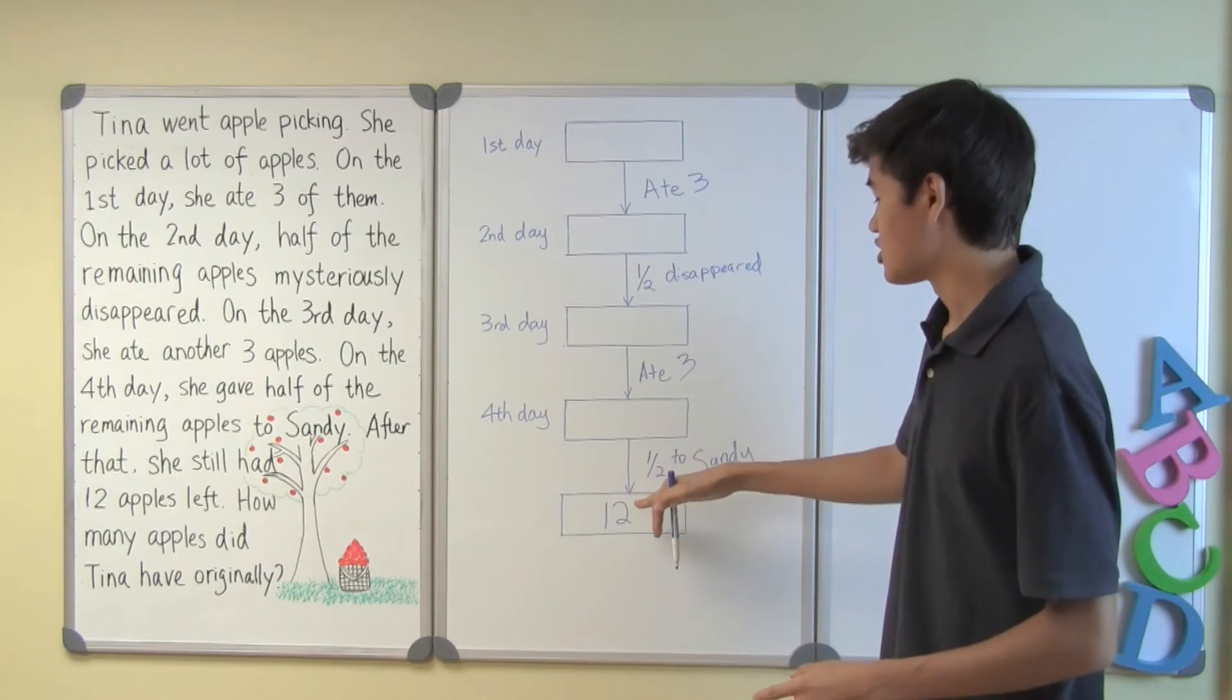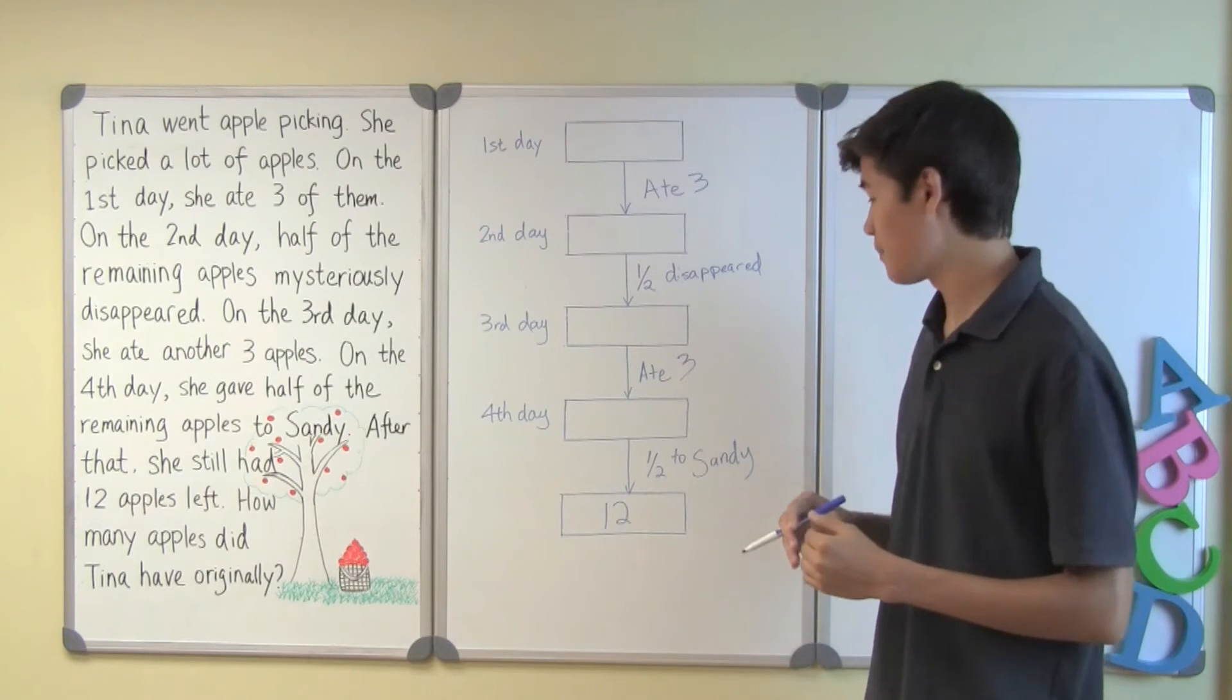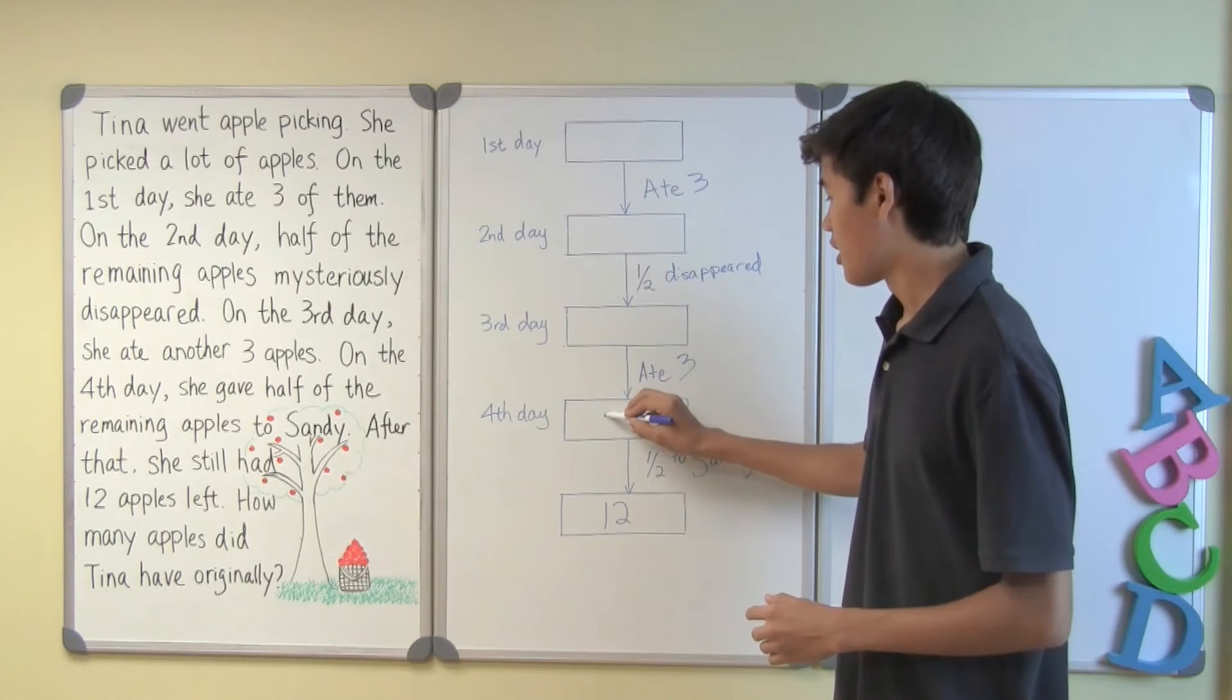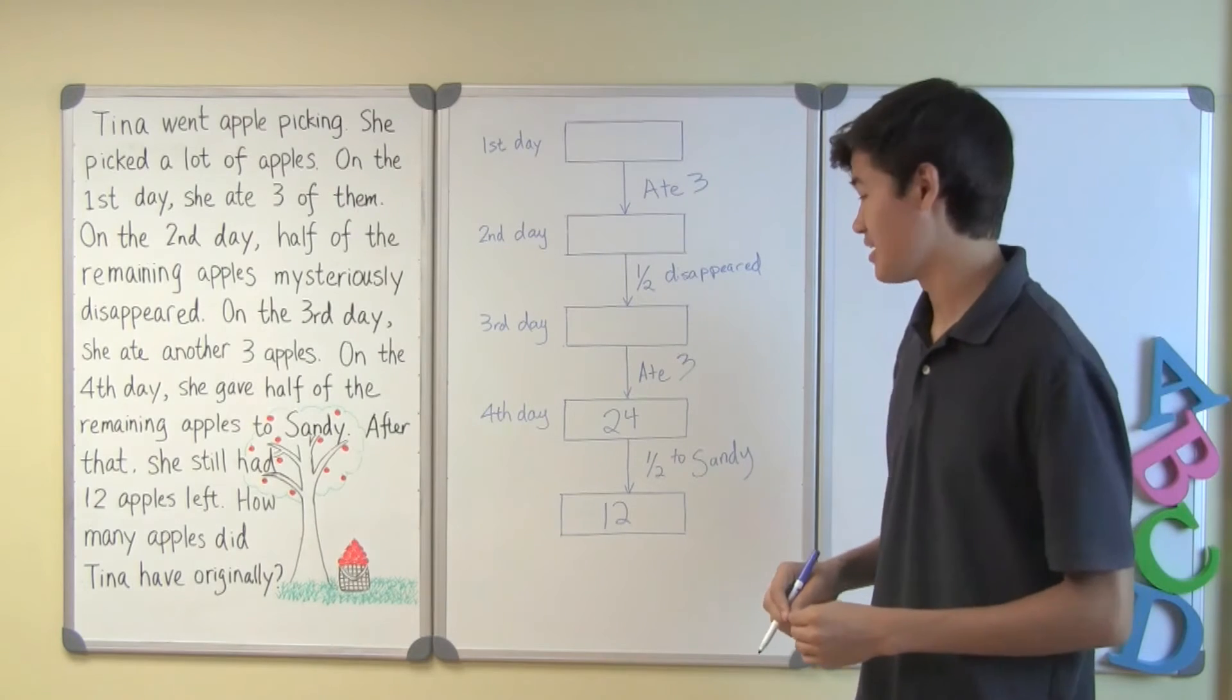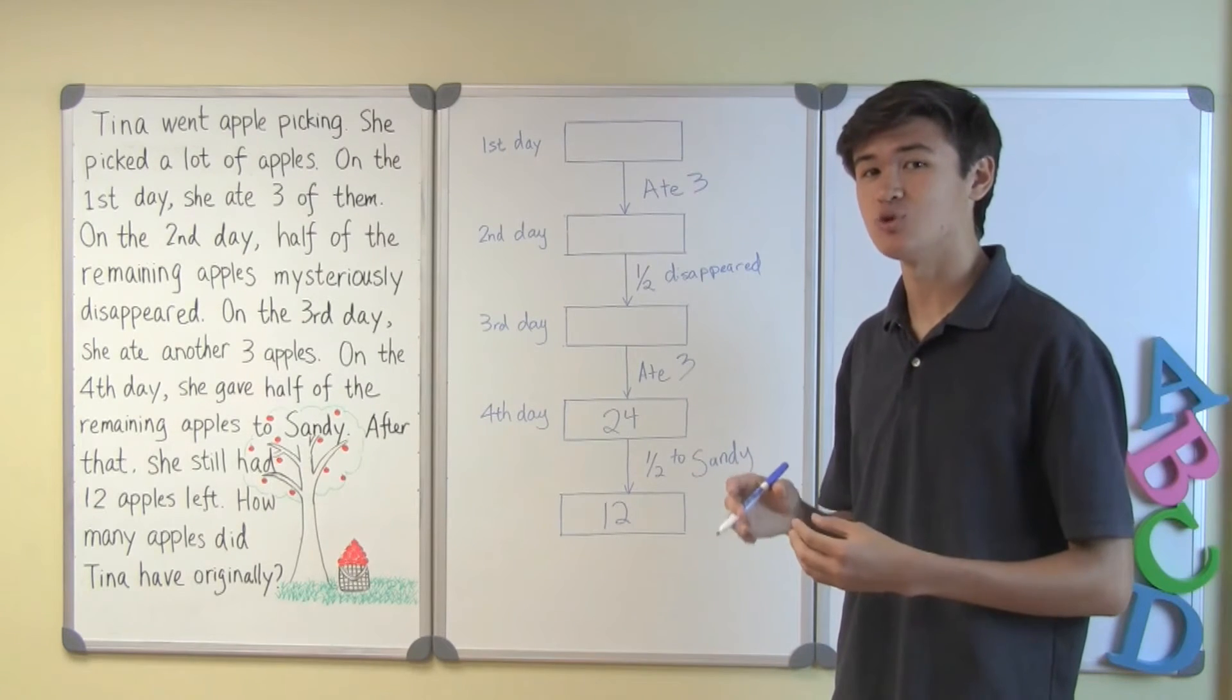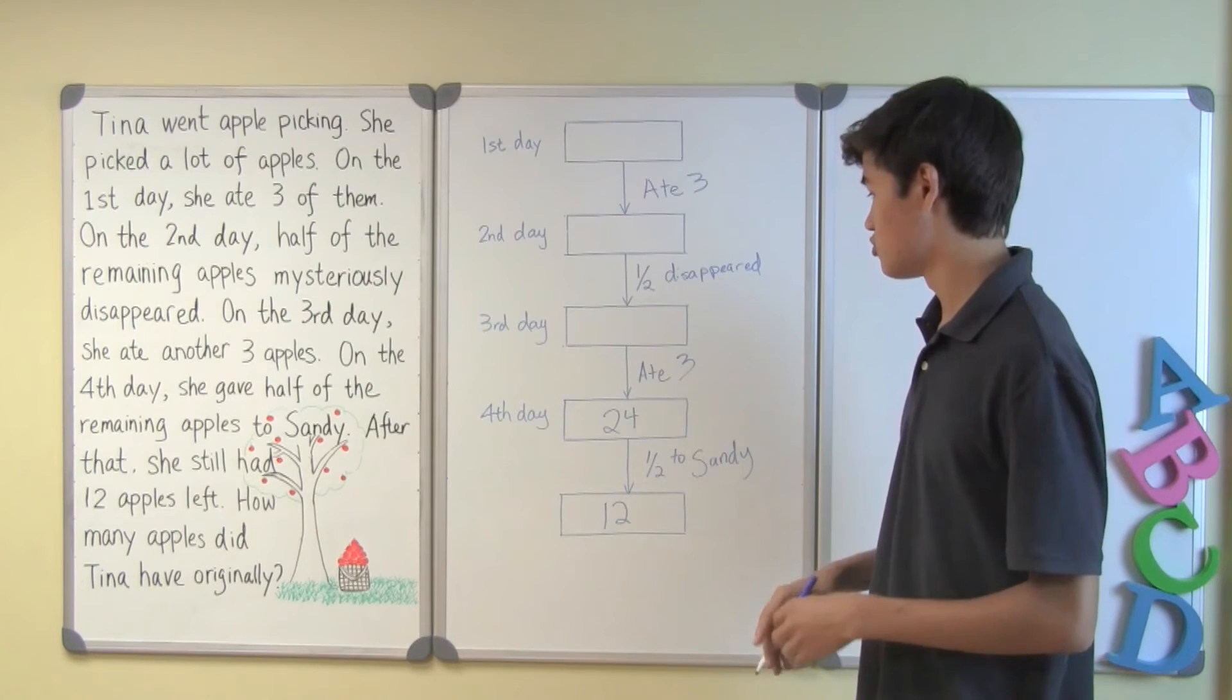So we're given 12 apples. And what happens right before 12 apples? Half of the apples were given to Sandy. So there must be 24 apples before she gives any apples to Sandy. Because if you have 24 apples and you give half away to Sandy, half of 24 is 12. So you give away 12 apples, which leaves you with 12.